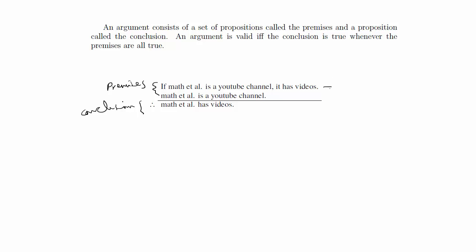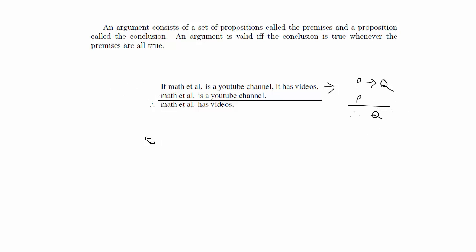If you translate this into logic statements, you have: if p then q, p, line of inference, therefore q. When you have problems like this, you're going to be asked to prove that the argument is valid — that you can draw the conclusion from the premises you're given. One way of doing this is using the method of derivations, where you write out line by line how you'd get from the premises to the conclusion. This simple example is actually a law in logic called modus ponens.